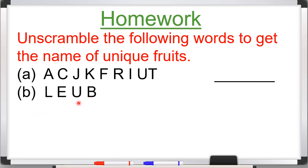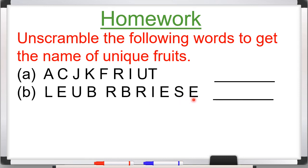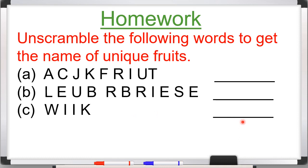Part B: L-E-U-B-R-I-E-S-E. Here also, alphabets are given in jumbled form. You have to arrange these alphabets correctly to form the name of a unique fruit, and write that name in the given space. Part C: W-I-E-I-E-K. In Part C also, alphabets are given in jumbled form. You have to arrange them correctly to form the name of a unique fruit and write it in the space.